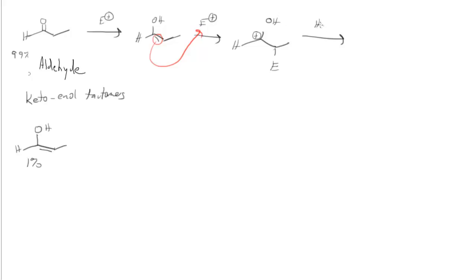So if I have something come along it doesn't have to be really basic, something like water even. I can come by and grab this proton. This electron pair goes back to form the carbonyl. And we get the same product that we did last time using the enolate. This time through a neutral enol.